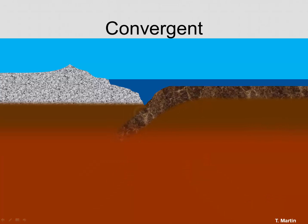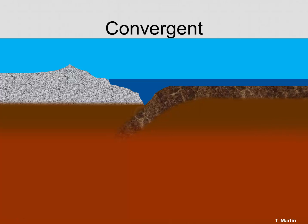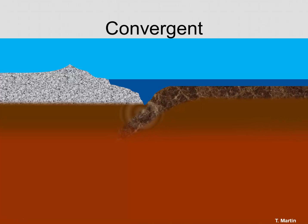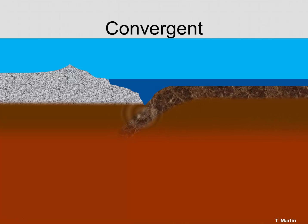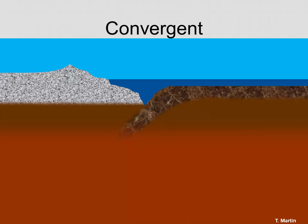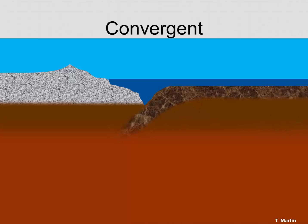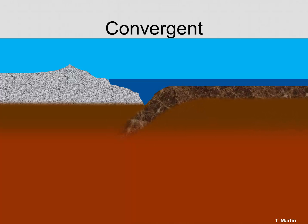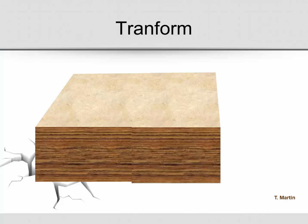The next type of motion, convergent motion, happens when plates collide. Here we can see an oceanic plate subducting beneath a continental plate. As the plate subducts, it cracks and breaks, generating earthquakes.